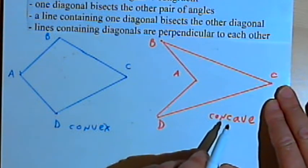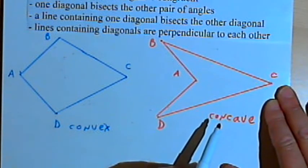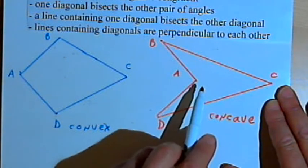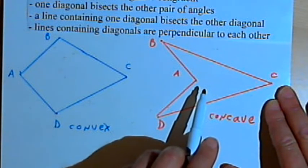The other kite that I've drawn on the right, the one in red, is a concave kite. It's got one angle, the angle at A, which is greater than 180 degrees.